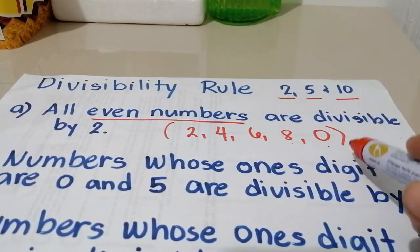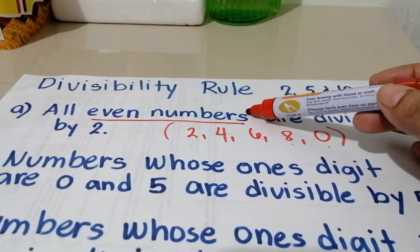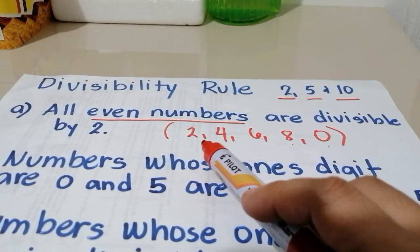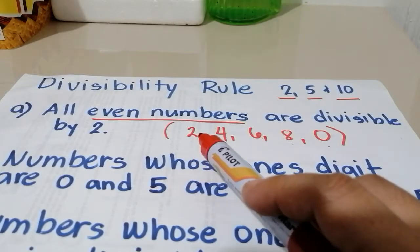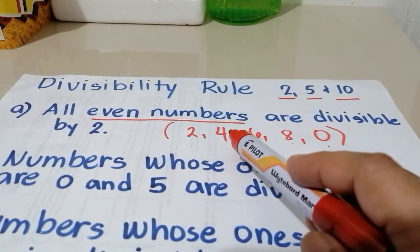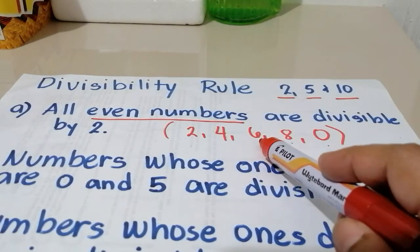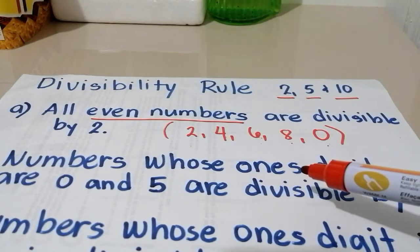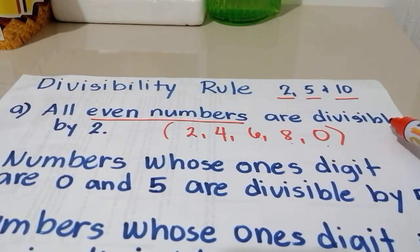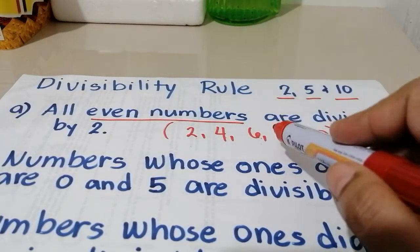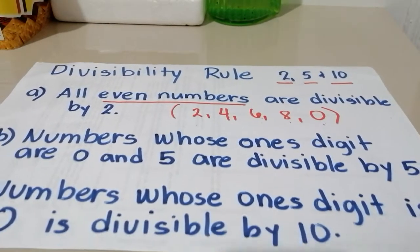Anong ibig sabihin nun? Kapag sinabing even numbers, yung last digit or yung ones digit ng kahit anong number, pag nag-e-end siya sa 2, 4, 6, 8, or 0, ibig sabihin yung number na yun ay divisible by 2. So pwede siya ma-divide by 2. That's the rule for divisibility rule of 2.